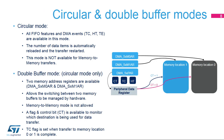DMA controllers support circular mode, allowing you to configure the number of data items to transfer once and automatically restart the transfer after a transfer complete event. Double buffer mode is only available in circular mode. It allows you to switch automatically by hardware between two memory addresses each time a transfer complete event occurs.